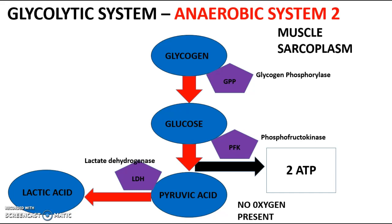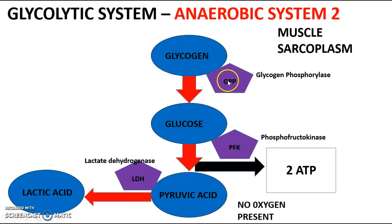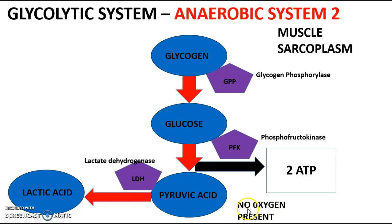To recap the full pathway: the system takes place in the muscle sarcoplasm. Glycogen is our main fuel, stored in muscle cells via carbohydrates, broken down by GPP into glucose. Glucose is broken down by PFK into pyruvic acid, releasing two ATP through anaerobic glycolysis. When pyruvic acid forms and no oxygen is present, lactate dehydrogenase (LDH) is stimulated and breaks pyruvic acid down into lactic acid.